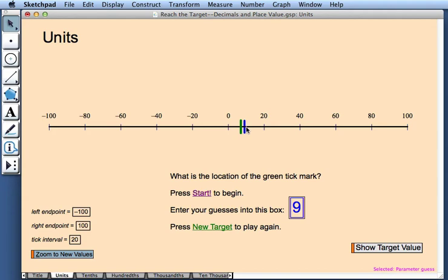And it looks like I'm a little bit off, so I'll change my guess. Perhaps the green tick mark is at 8. Still not 8, so 7. There we go.